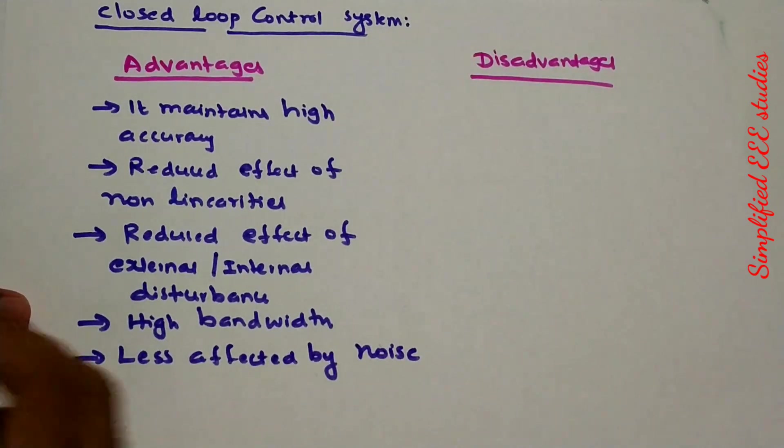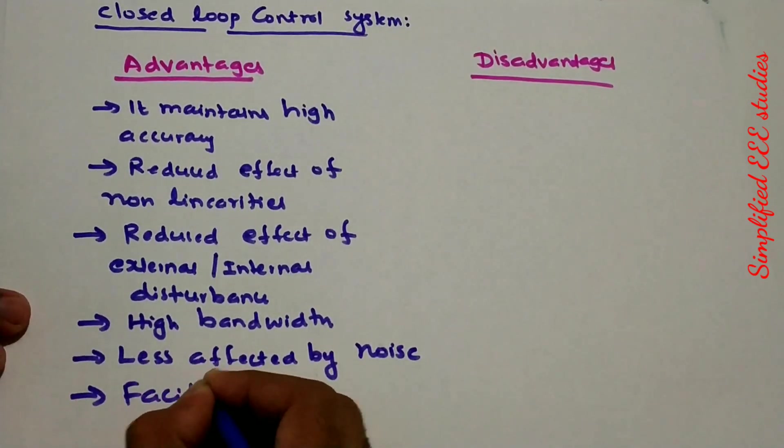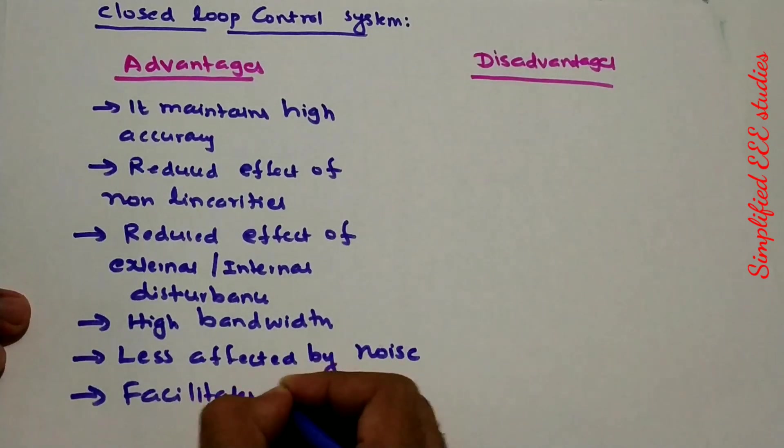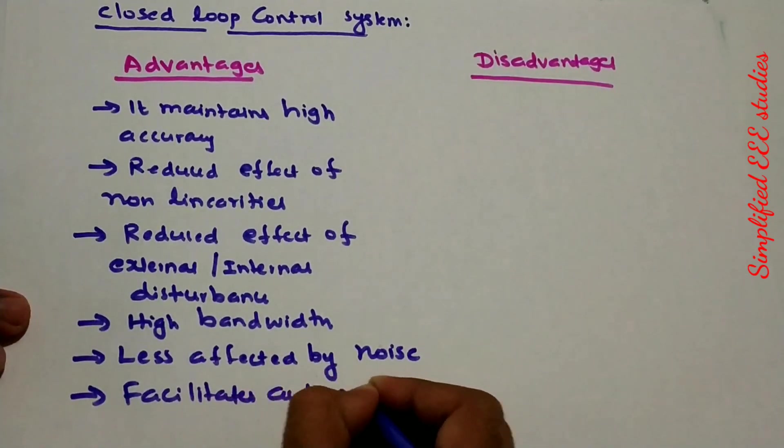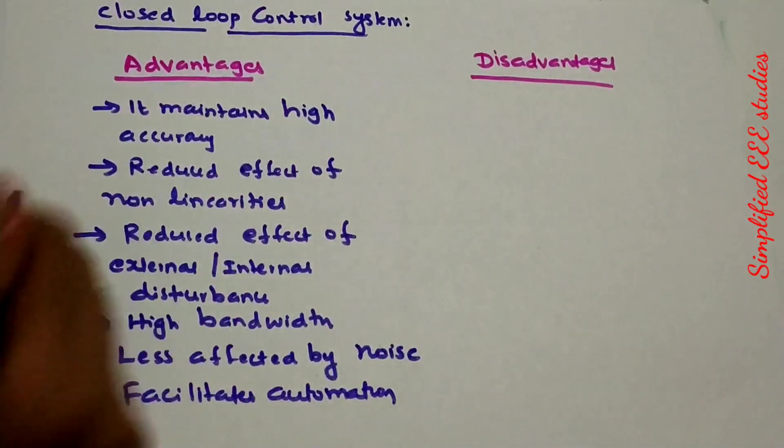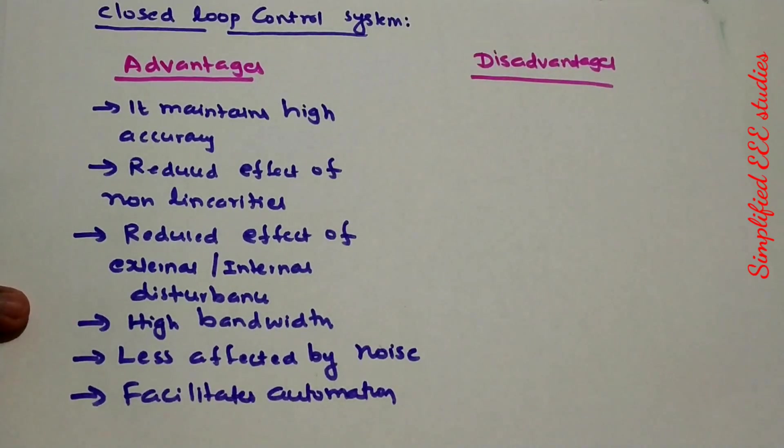Moreover, facilitates automation. These are the few advantages of closed loop control system. Now let us move on. Some drawbacks.